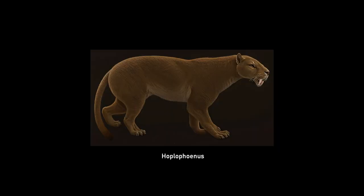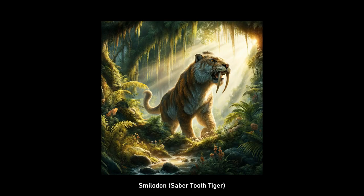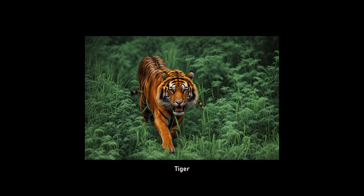Finally, Hoplofenus was discovered as a transitional species to saber-toothed cats, the most famous of which is the genus Smilodon. However, this subfamily became extinct around 11,000 years ago when saber-toothed cats lost the food competition with cone-toothed cats.